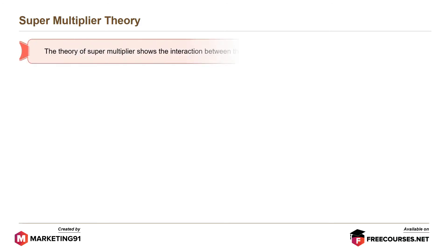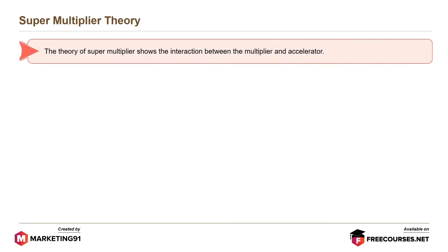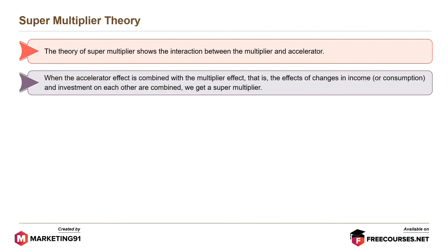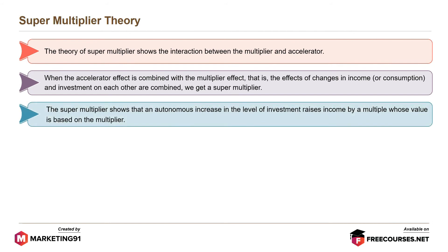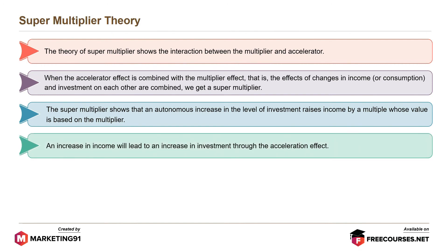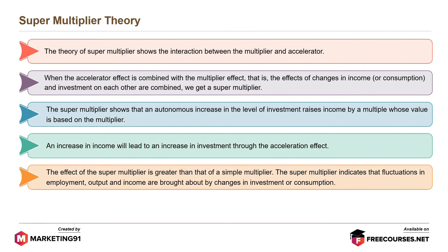Moving on to the supermultiplier. The theory of supermultiplier shows the interaction between the multiplier and accelerator. When the accelerator effect is combined with the multiplier effect — that is, the effects of changes in income or consumption and investment on each other are combined — we get a supermultiplier. The supermultiplier shows that an autonomous increase in investment raises income by a multiple based on the multiplier, and an increase in income will lead to an increase in investment through the acceleration effect. The effect of the supermultiplier is greater than that of a simple multiplier, and it indicates that fluctuations in employment, output, and income are brought about by changes in investment or consumption.